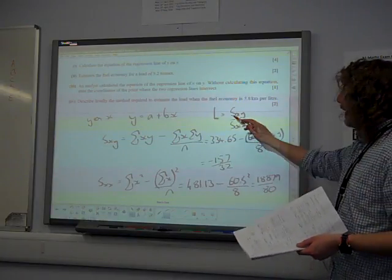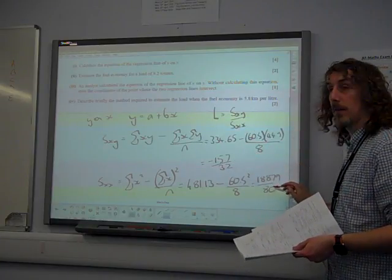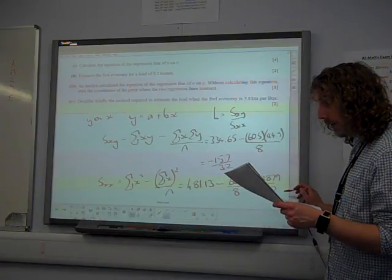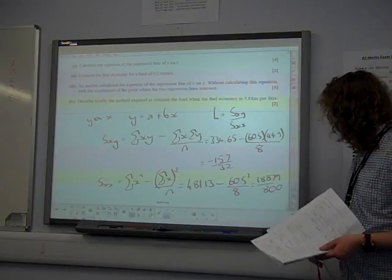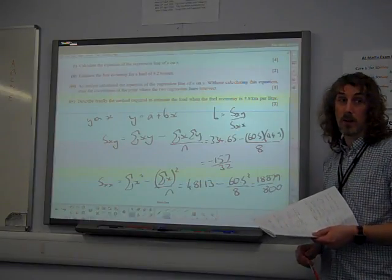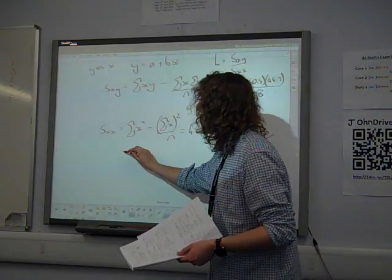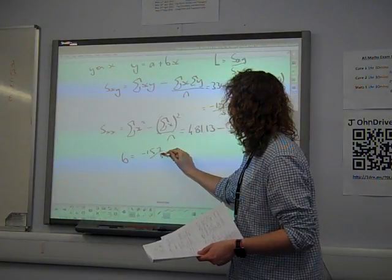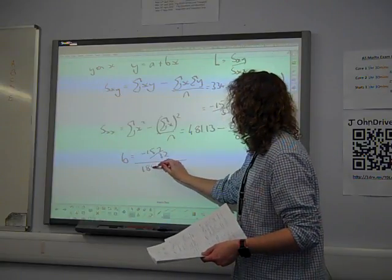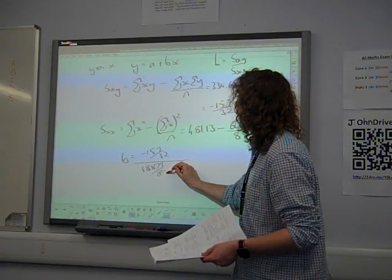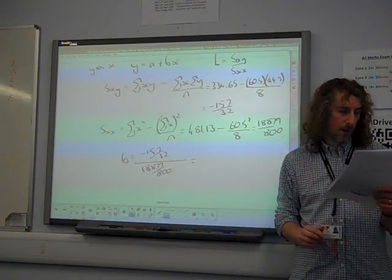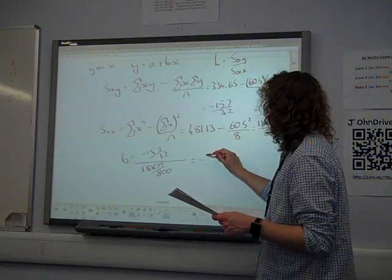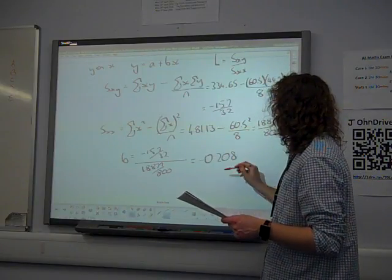We then need to work out b. b is this number divided by that number. I said 800 on row 80, but now I've written 800. So b is that one, minus 157 over 32, divided by 18879 over 800, which gives us minus 0.208 to three significant figures.